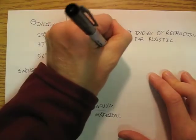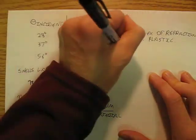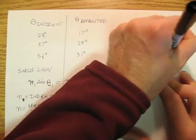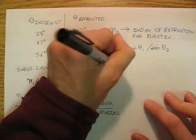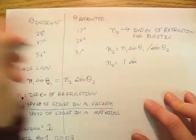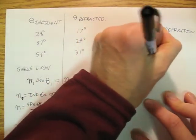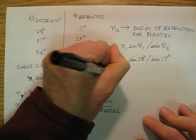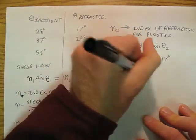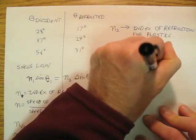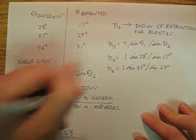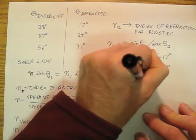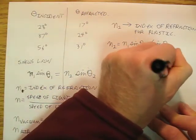So I'm going to have N2 is equal to N1 sine theta 1 divided by sine theta 2. So I'm going to have N2 is equal to 1 sine 28 degrees divided by sine 17 degrees. I'm also going to have N2 as 1 sine 37 degrees divided by sine 24 degrees. I'm also going to have N2 is 1 sine 56 degrees divided by sine 31 degrees.